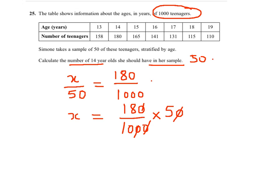Simplifying, it will give me 18 times 5 which is 90 divided by 10. So the number of 14-year-olds in her sample of 50 would be 9.